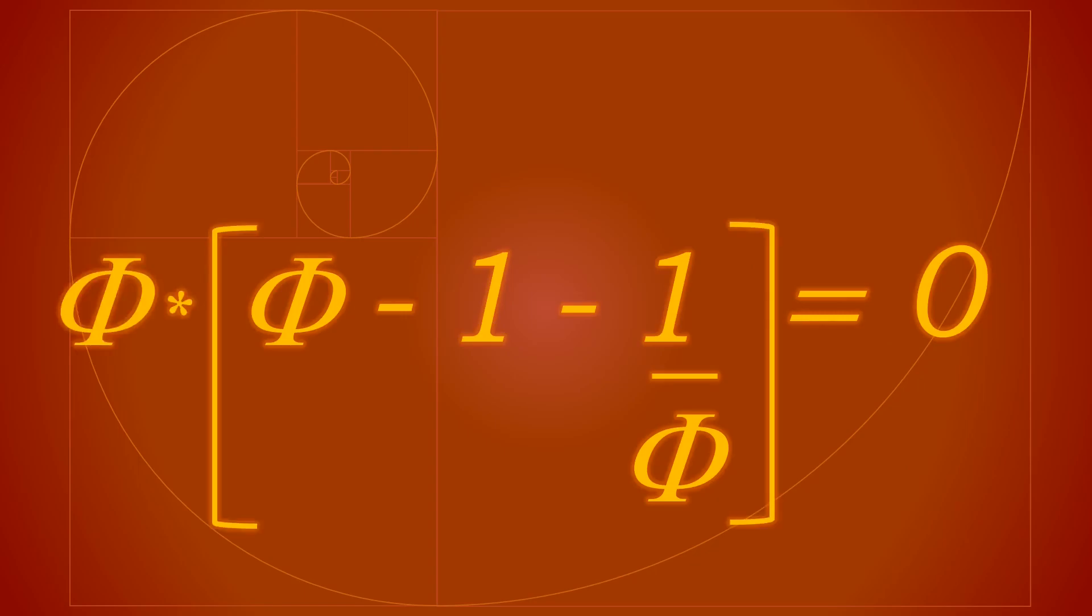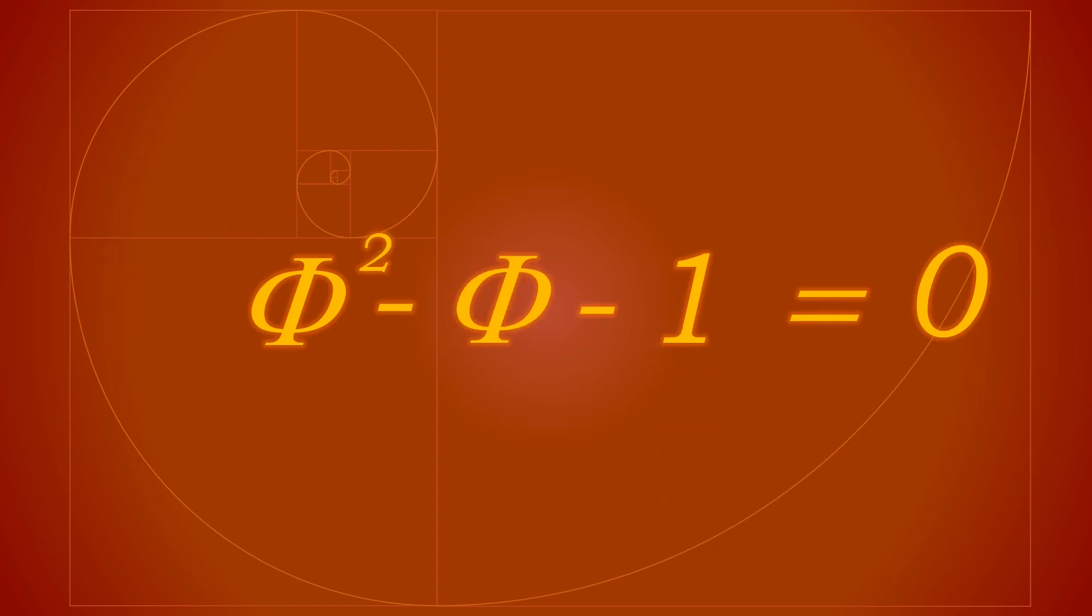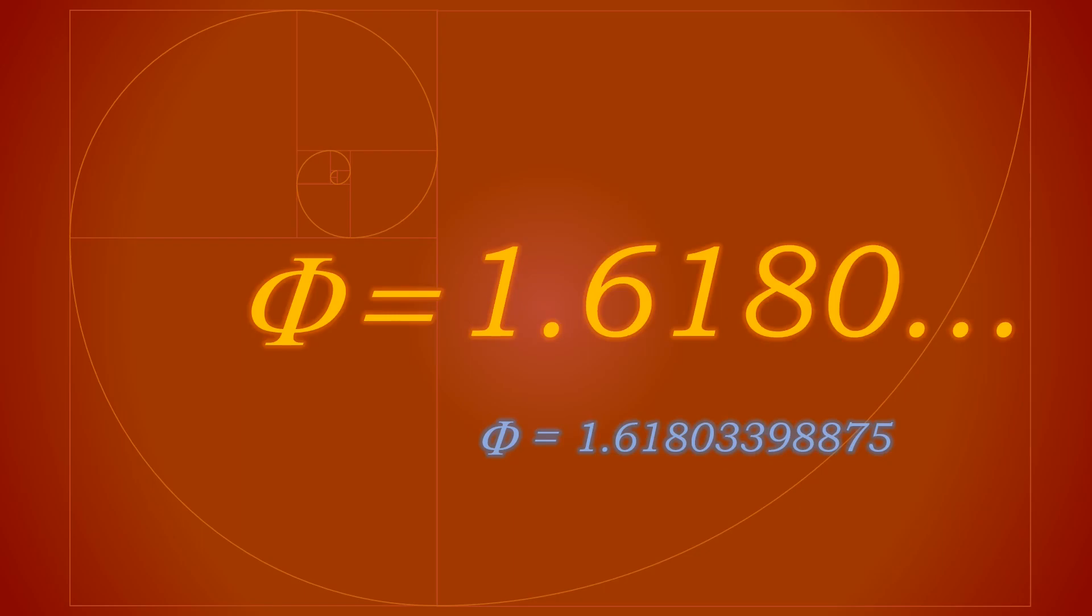Multiply the equation by phi and you get phi squared minus phi minus one. Then substitute in the numbers for the quadratic formula and you get phi is equal to one plus the square root of five over two, or one point six one eight zero and so on.